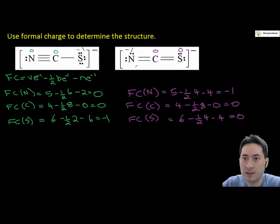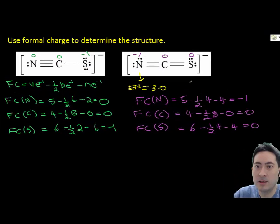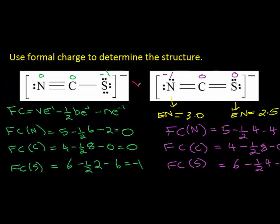So now we have to look at the electronegativities, and because nitrogen has a higher electronegativity, the correct structure must be the one on the right hand side, not the left.